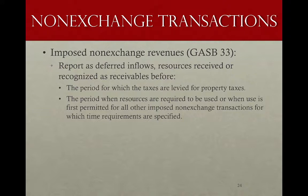The first example is imposed non-exchange revenue — essentially property taxes, although it also includes fines and penalties. A government should report an inflow related to property taxes as a deferred inflow of resources if the resources are received or recognized as receivable before the period for which the taxes are levied. For example, if a government has a July 1 fiscal year but establishes its levy in May — legally enforceable at that point — the government has a claim to those property taxes. It can report a receivable, but any inflows received prior to the beginning of the following fiscal year will be reported as a deferred inflow because it's not related to the current period; it's related to a future period.